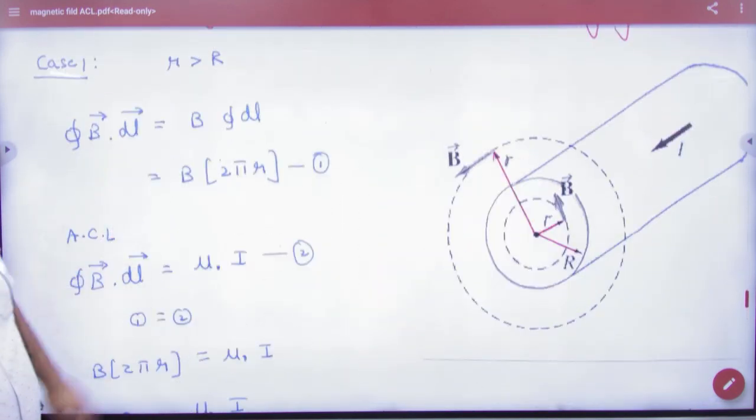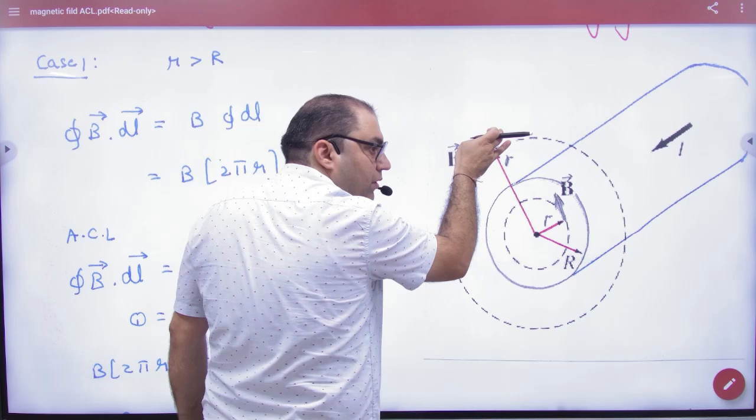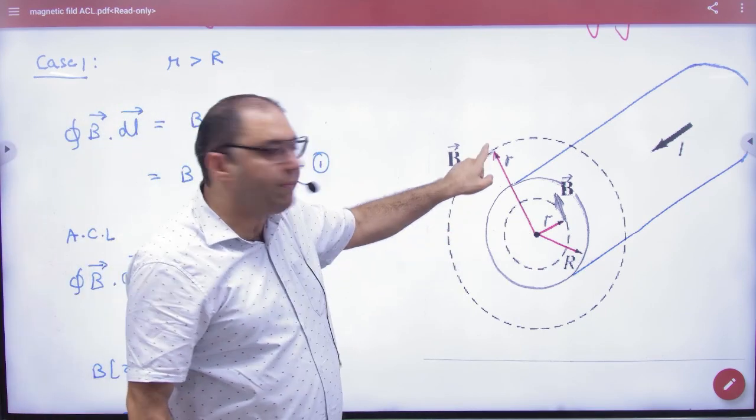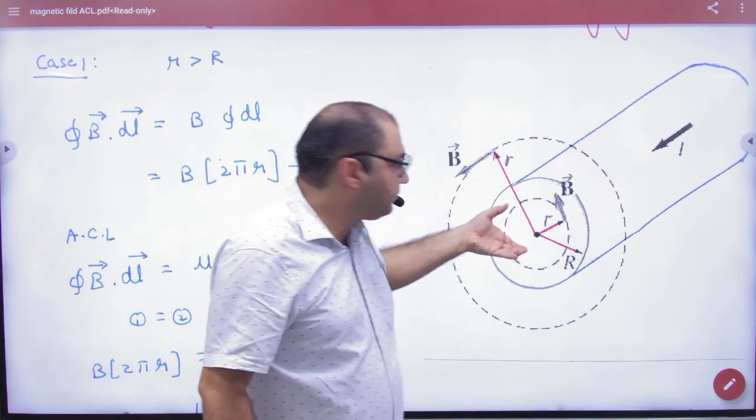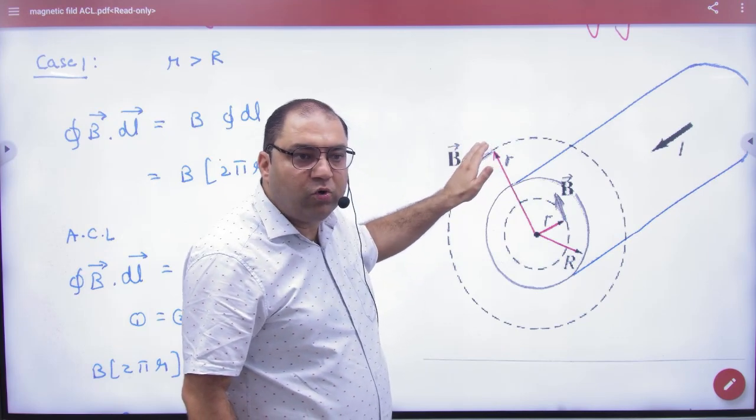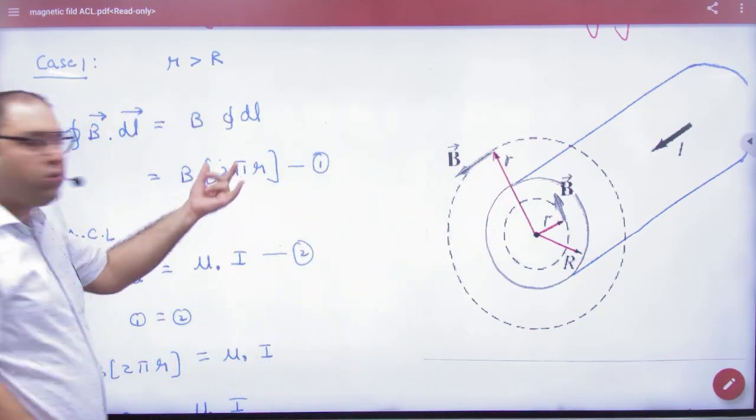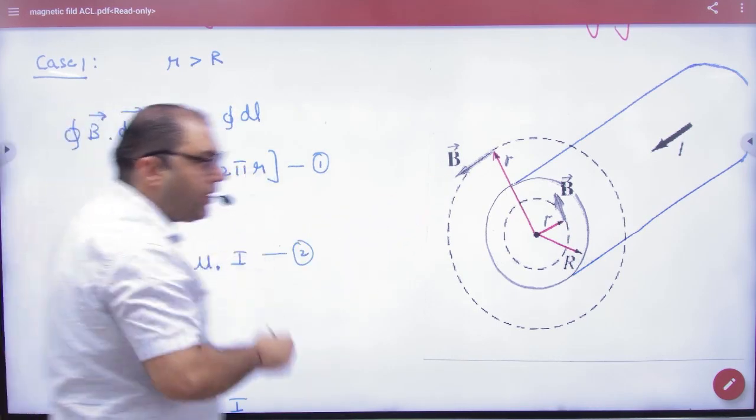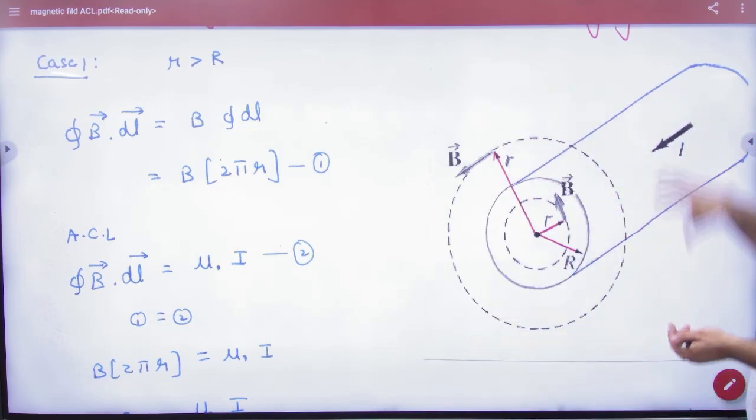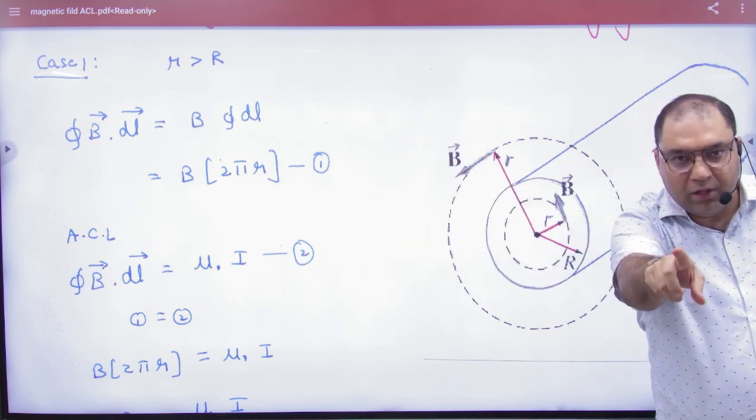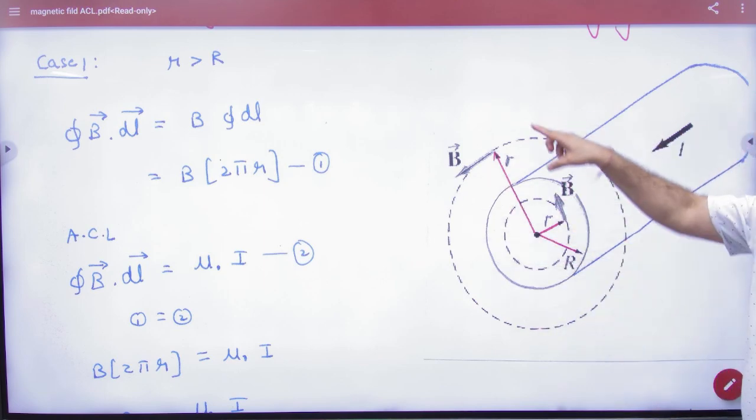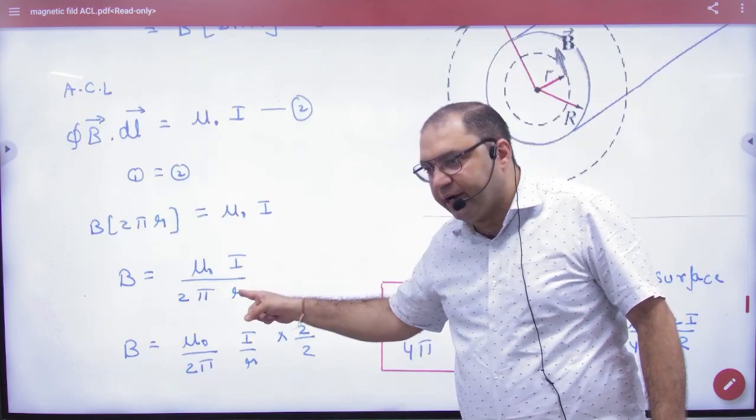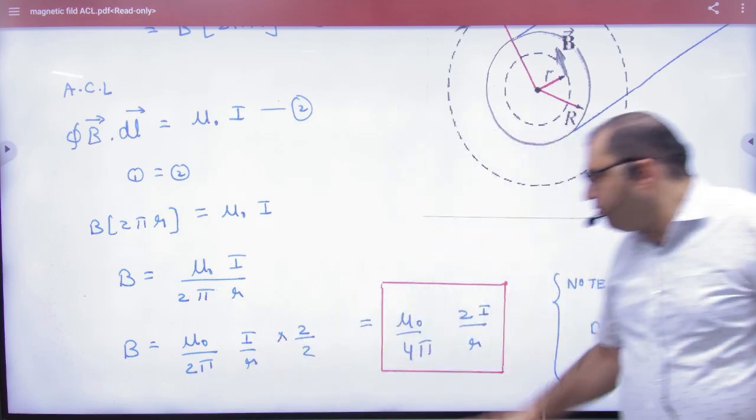And if I get a question that I have to find B outside the wire, the second case is B where small r is greater than capital R. Greater than capital R means outside. If now the closed path is outside of radius small r, then I will do the first step again: B·dl = B×2π×r. This time the closed path is outside. Inside this closed path, how much current is there? The closed path has become quite large. Inside it, the total current is I.